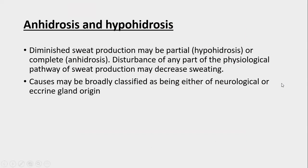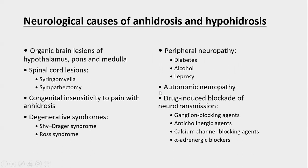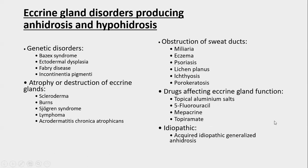Anhidrosis or hypohidrosis refers to diminished sweat production, either partial or complete. Disturbance of any part of the physiological pathway of sweat production may decrease sweating. Cases may be broadly classified as being of neurological or eccrine gland origin. Neurological causes include organic brain lesions of the hypothalamus, pons, and medulla; spinal cord lesions like syringomyelia or sympathectomy; congenital insensitivity to pain with anhidrosis; degenerative syndromes like Ross syndrome and Shy-Drager syndrome; peripheral neuropathies such as diabetes, alcohol, and leprosy; autonomic neuropathies; and drug-induced blockade via ganglion-blocking, anticholinergic, calcium channel-blocking, or alpha-adrenergic blocking agents.